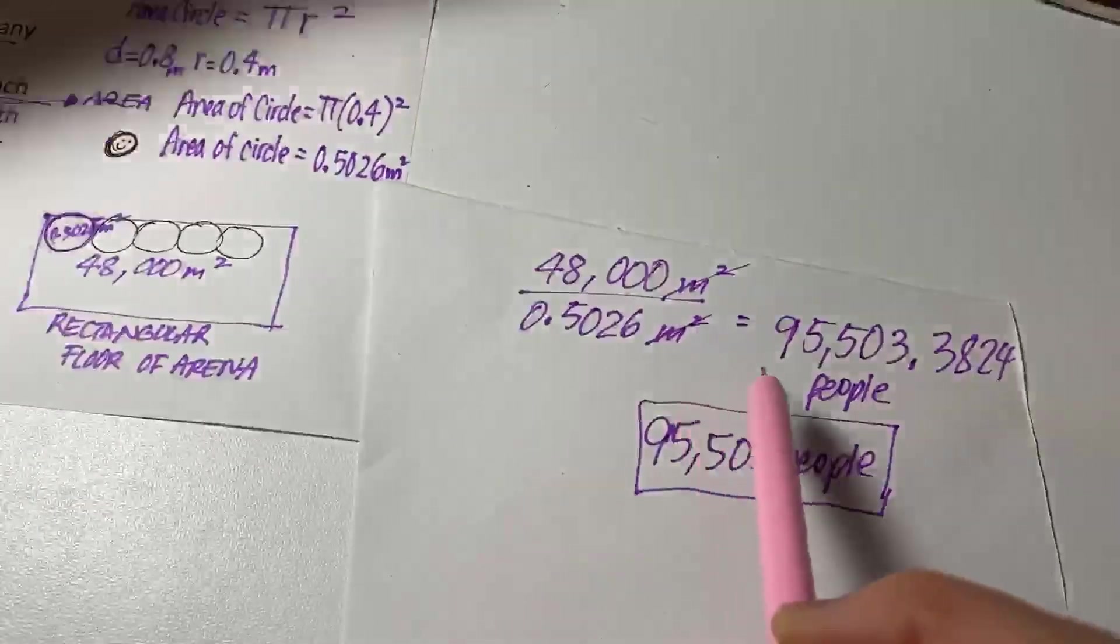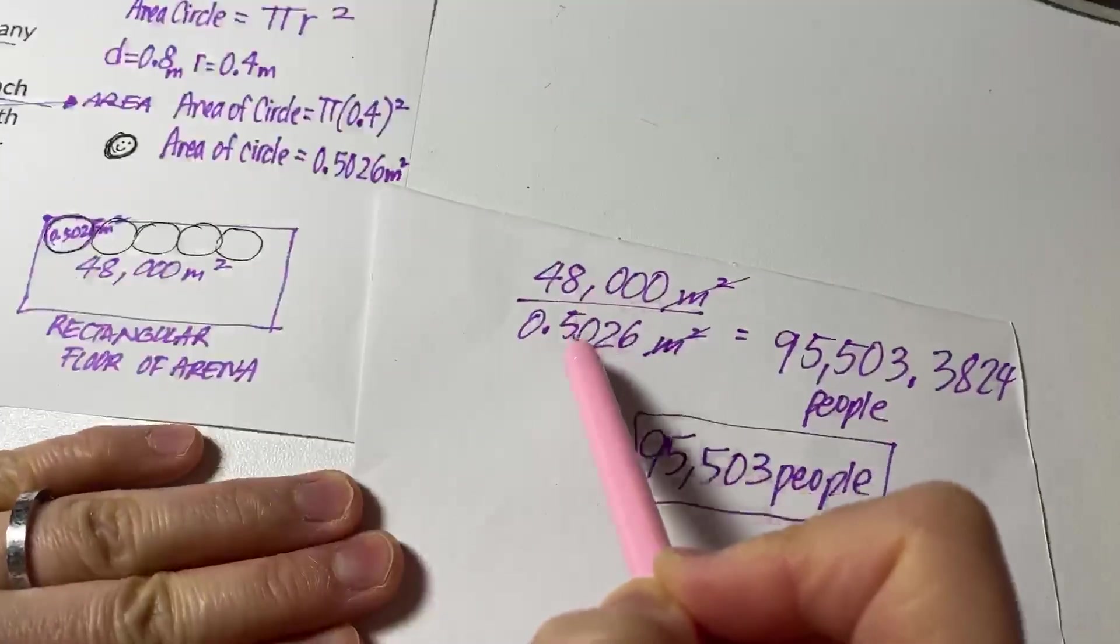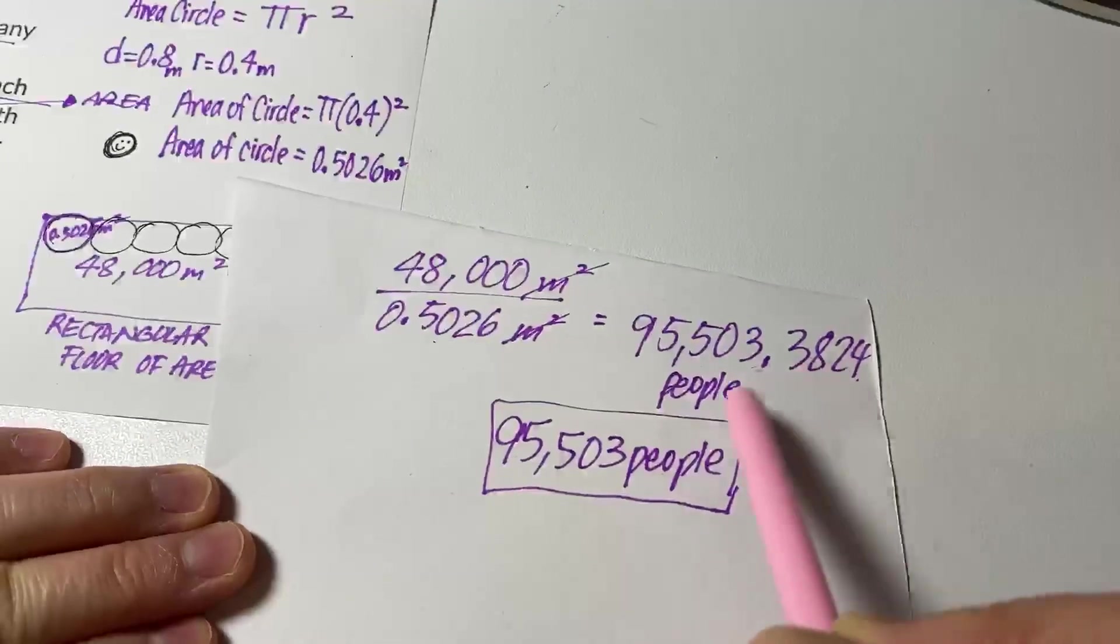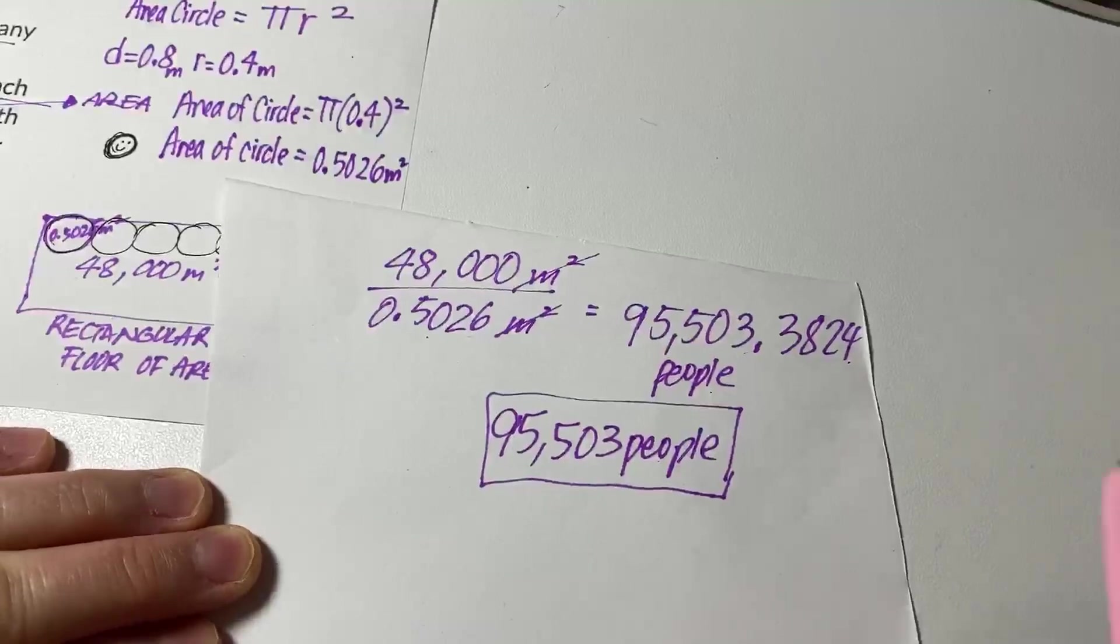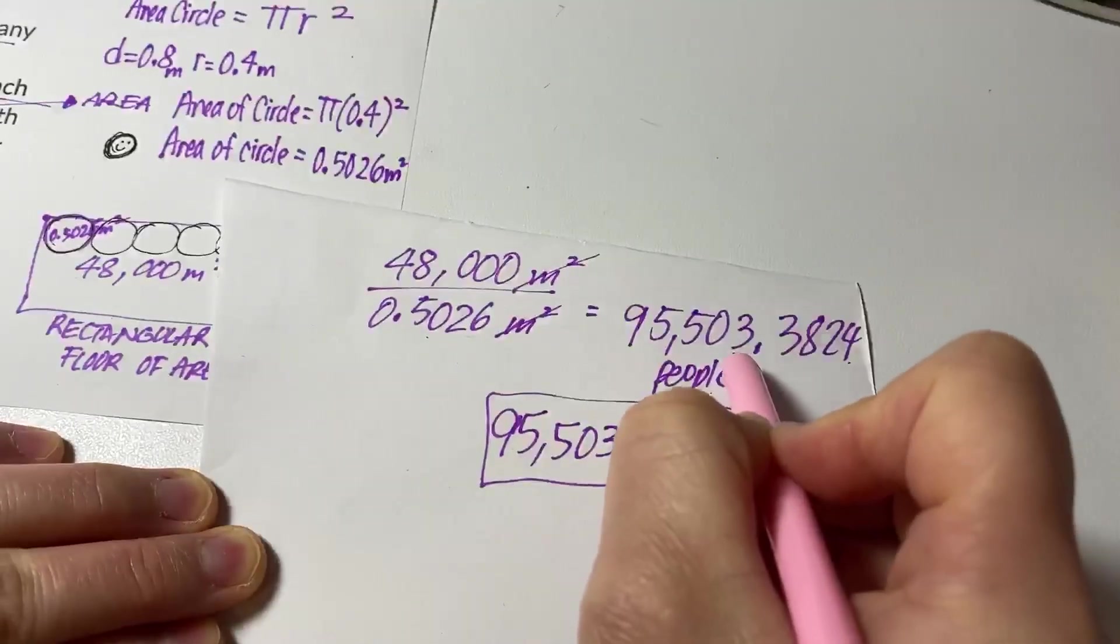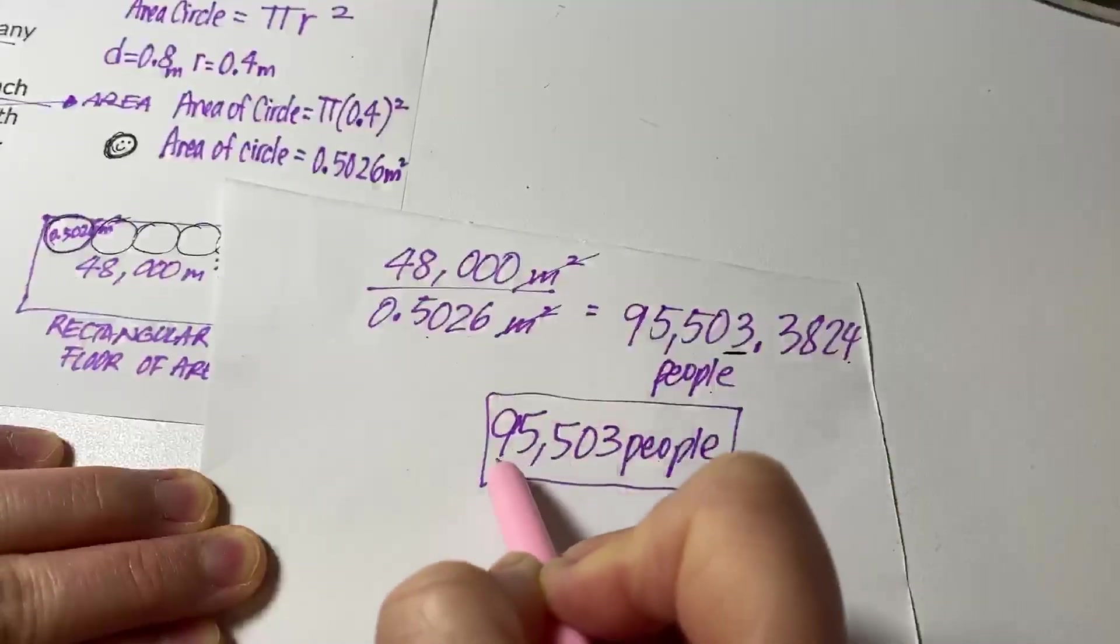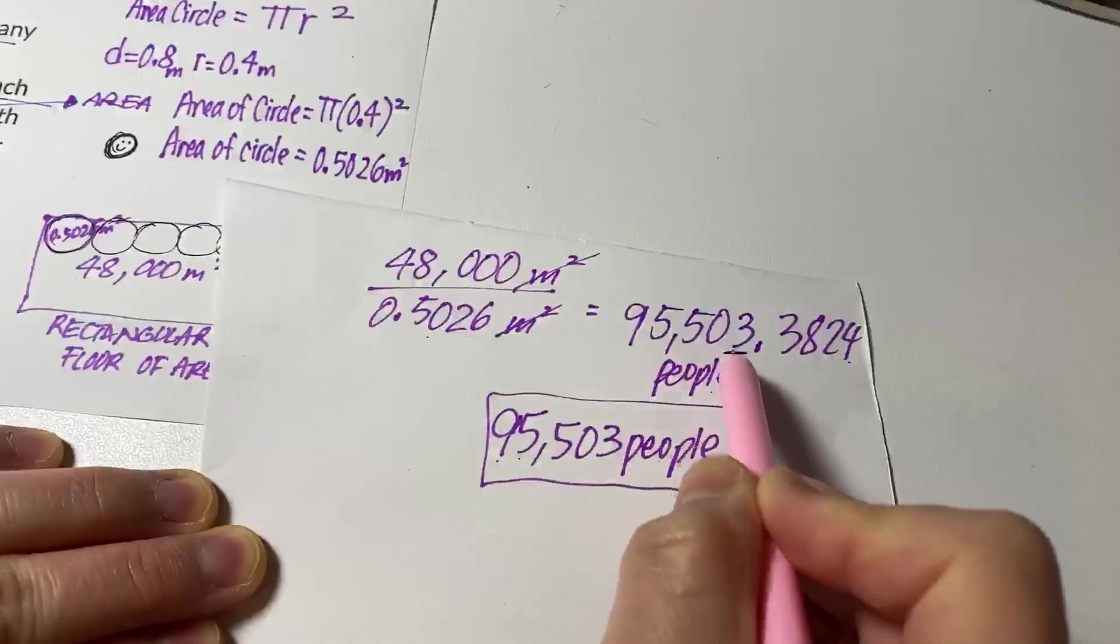And so now, when you divide the top and the bottom, this is how many people we get. Now remember, there's no such thing as a fractional number of people. So the full amount of people we have is 95,503 people.